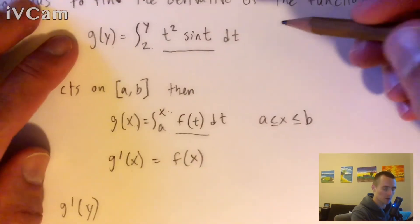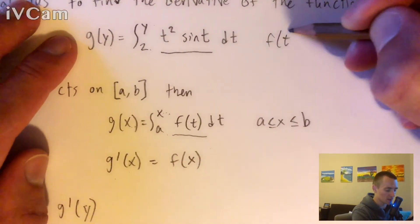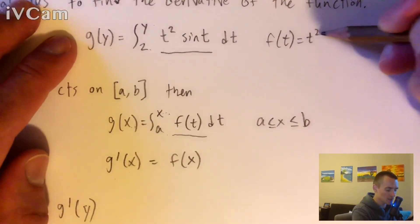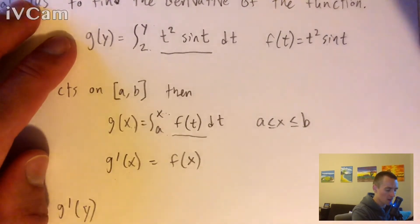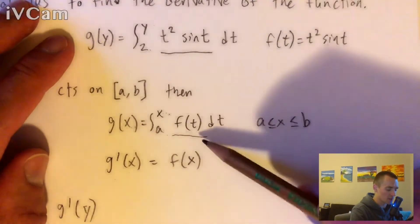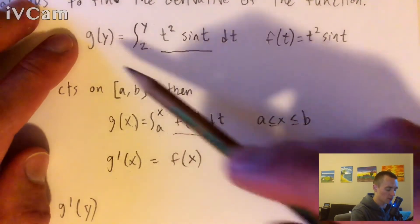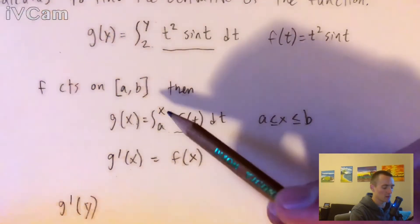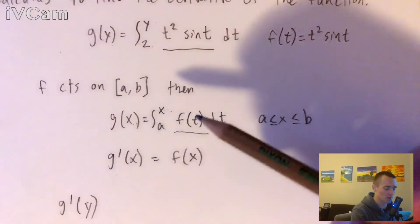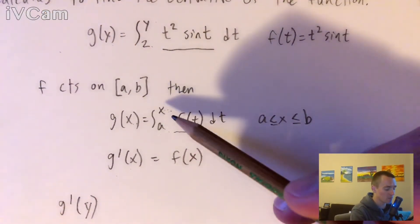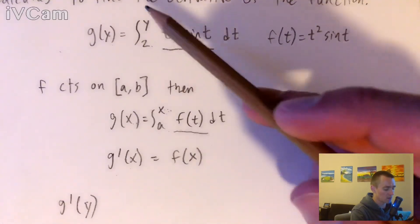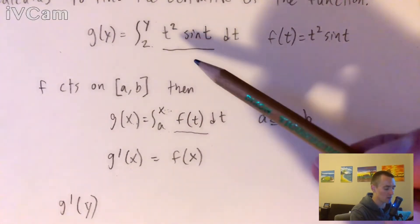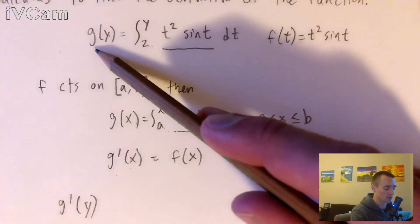So basically we have that f of t in this case is t squared sine of t, and if we integrate that f of t from some constant up to our variable, which is y in this case, obviously the letters are a little different, but the concept is the same. It's just a dummy placeholder variable. Since it's x here, we can treat y the same here because it tells us it's a function of y.